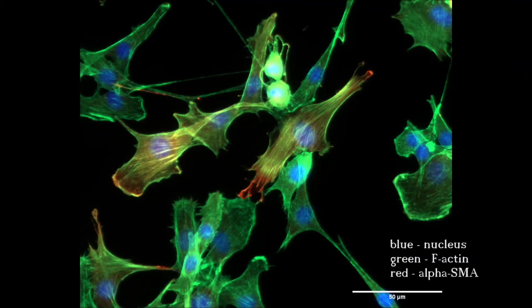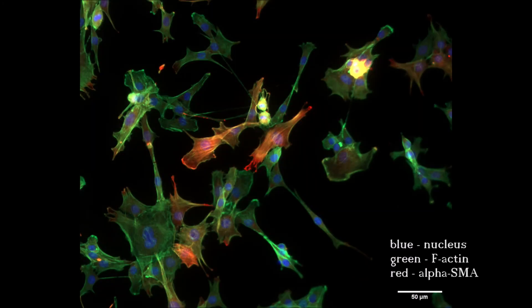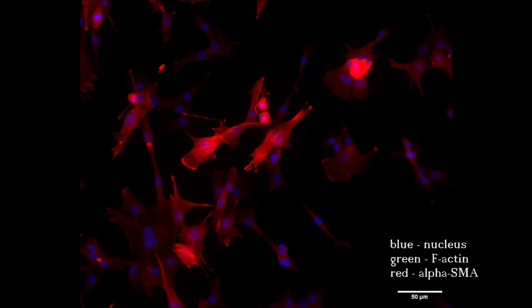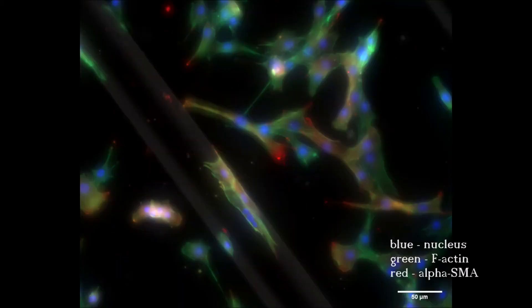We can say that there is no obvious difference in alpha SMA expression between our cells seeded on curved substrates and on a flat substrate after 24-hour incubation. There is also no myotube formation on any substrate after 24-hour incubation.